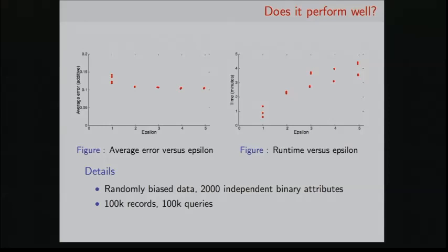Here's some experiments on randomly biased data. This has a lot more attributes, with 2,000 independent binary attributes, 100,000 records, and 100,000 queries. And again, here are four or five runs of this. And again, the runtime is a lot lower for this, partially because we're having a lot fewer queries. This is one-fifth the number of queries. And since we're maintaining distribution of all the queries, this is much lower runtime. Our accuracy is a little worse, but still pretty reasonable.